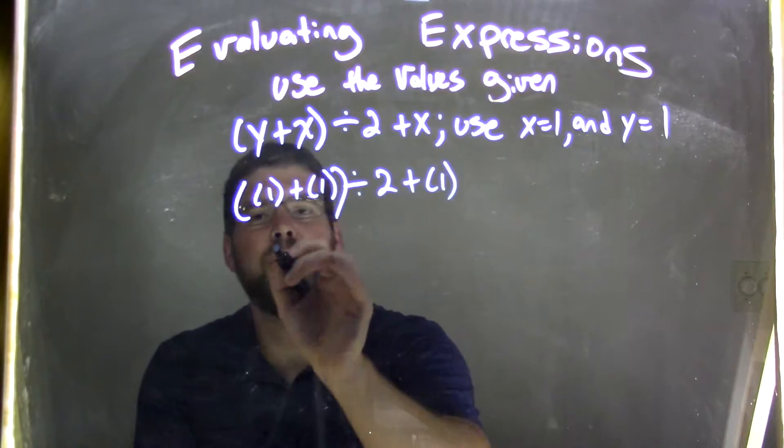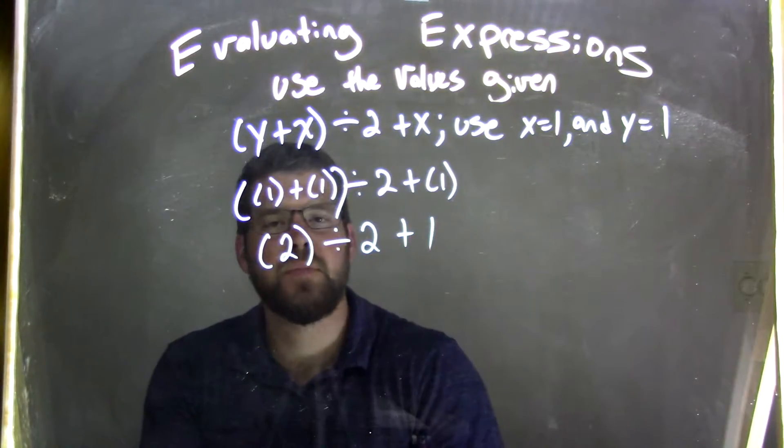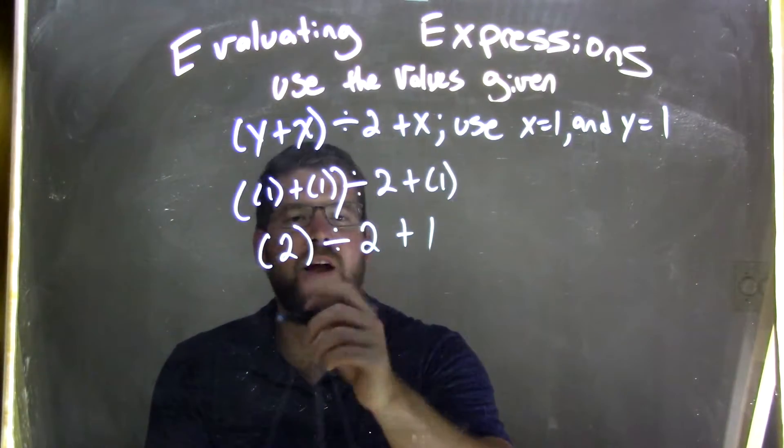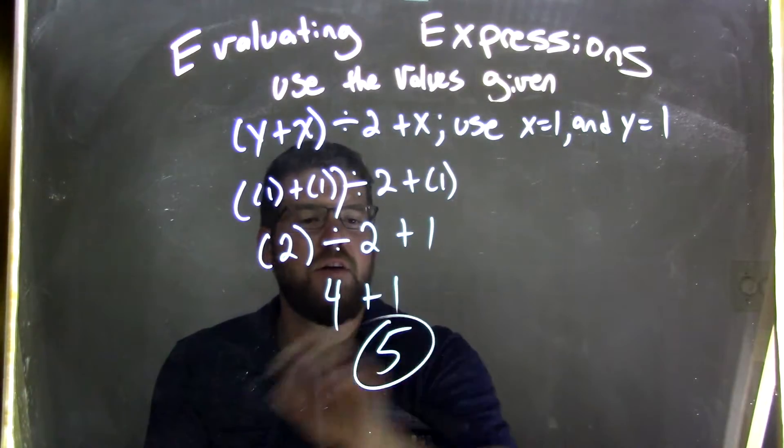Well, inside the parentheses first, 1 plus 1 is 2, divided by 2, plus 1. And 2 divided by 2, division comes before addition. 2 divided by 2 is 4, plus 1, and 4 plus 1 is 5.